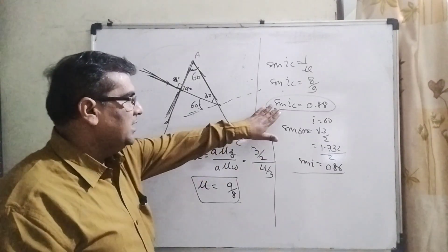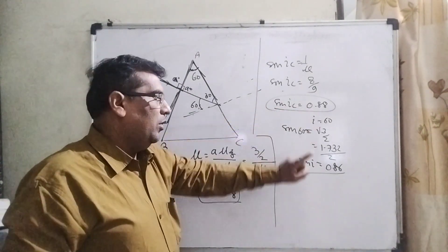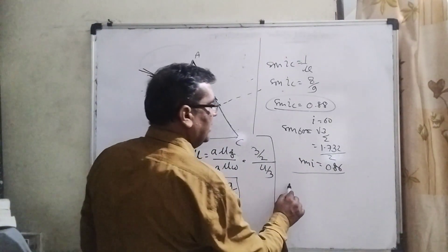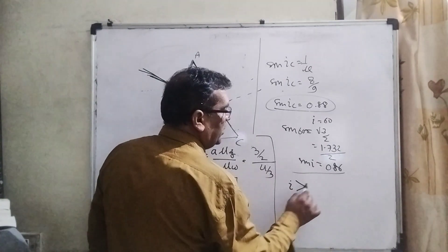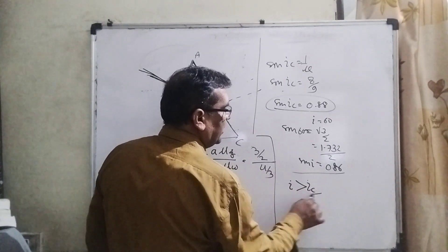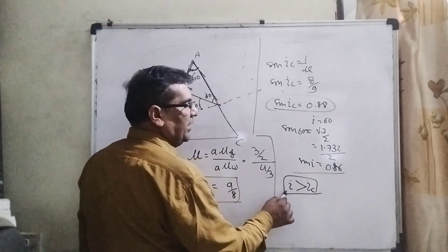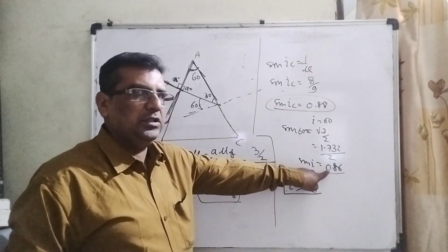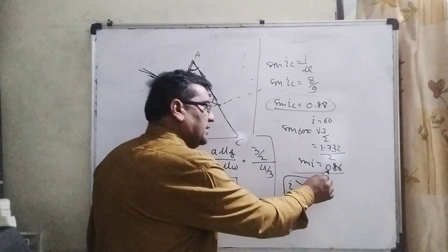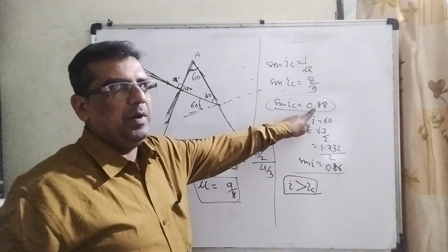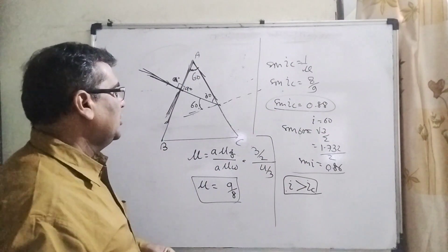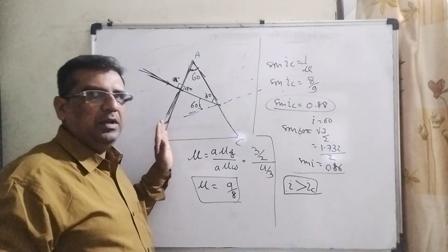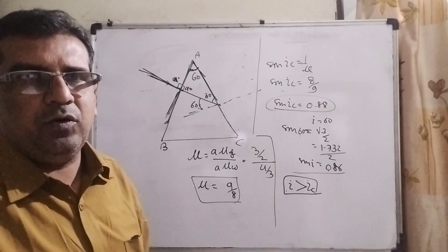Let me explain again: sin(ic) = 0.88 and our angle of incidence gives sin(i) = 0.86. The condition for Total Internal Reflection is that the angle of incidence must be more than the critical angle. But our angle of incidence value is 0.86, whereas it needs to be greater than 0.88. Therefore, the Total Internal Reflection phenomenon is not applicable in this case. I hope you have understood.